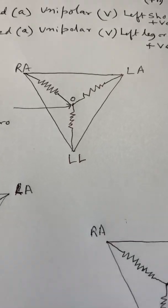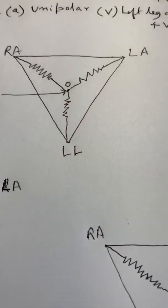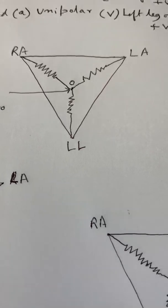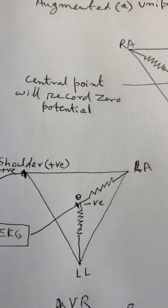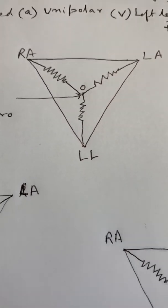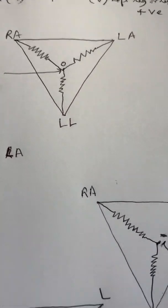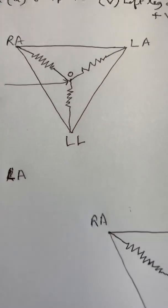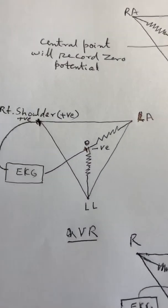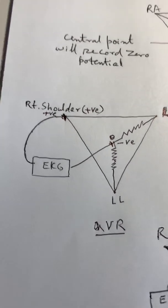Now why is it called unipolar? If you connect the center of the triangle with all three angles, the center point will record zero potential. So if there is a resistance wire connecting AVR, AVL, and AVF, the center point will record zero potential.